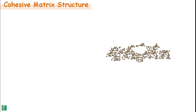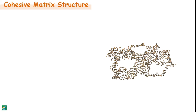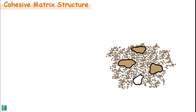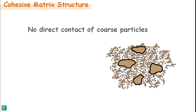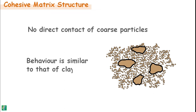On the other hand, in cohesive matrix structure, fine particles — predominantly clay particles — are present in very large quantity compared to coarse-grained particles. Coarse grains appear embedded in the fine grains and there is no direct particle-to-particle contact between them. The behavior of these soils is roughly similar to that of an ordinary clay deposit.